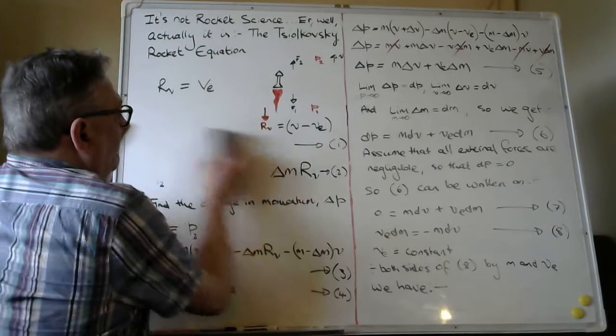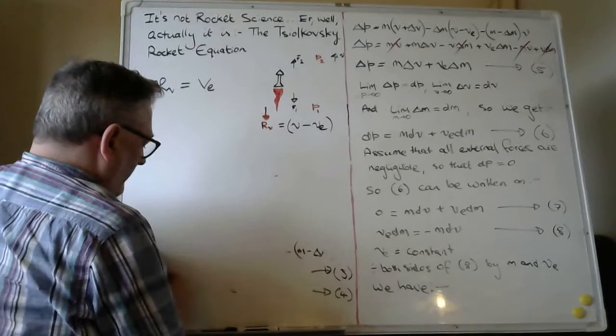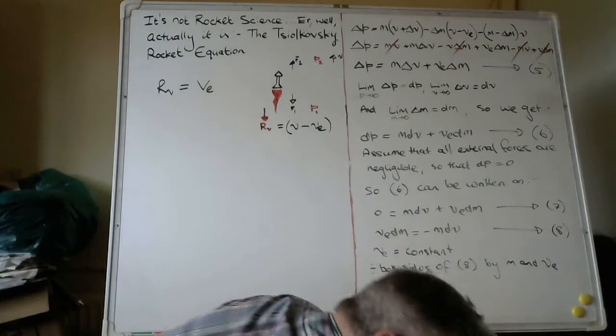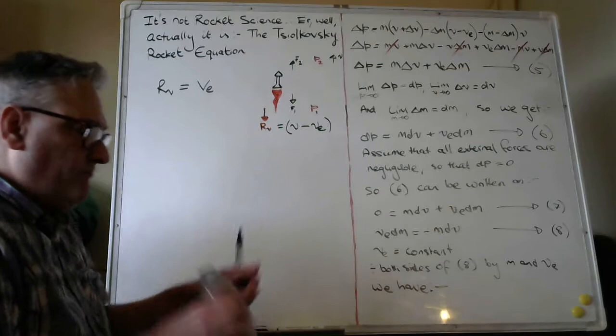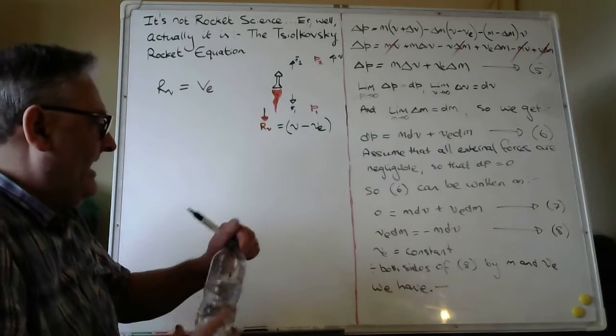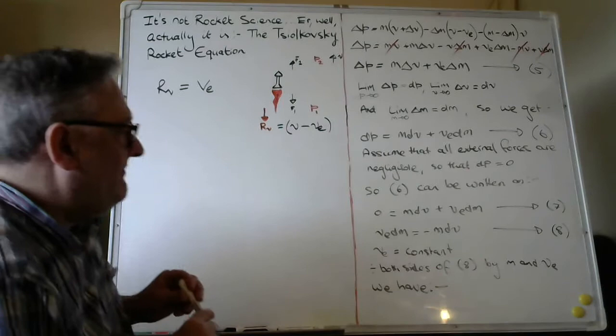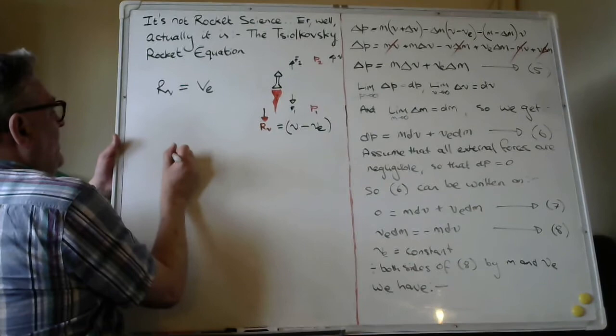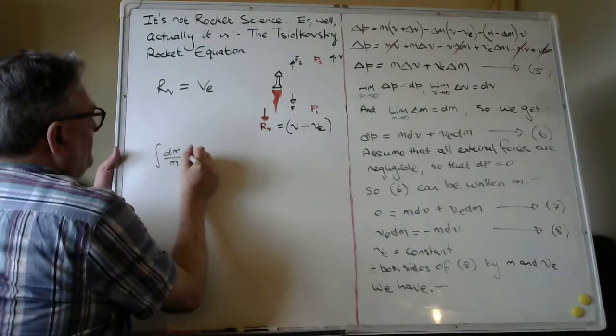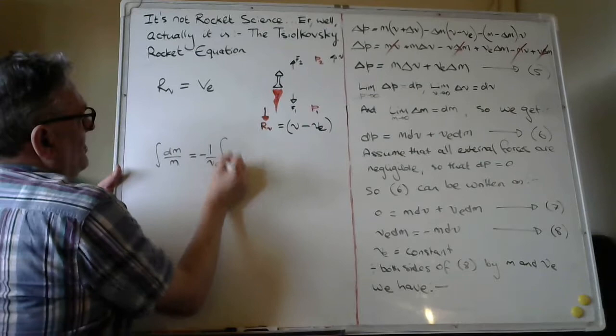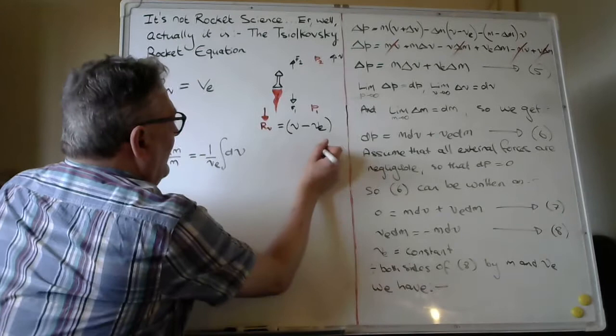So if we rearrange equation eight, we get, so dividing both sides of equation eight by M and VE, we have dm over M. And don't forget to put the integral signs in. And that's equal to minus one over VE times the integral of dv. And we'll call that equation nine.